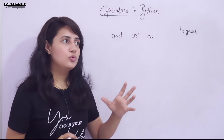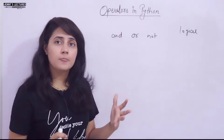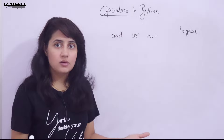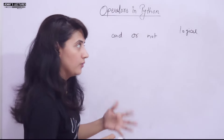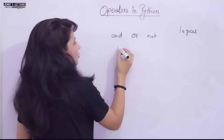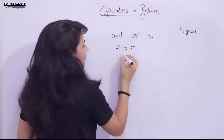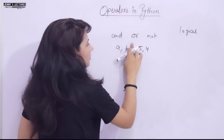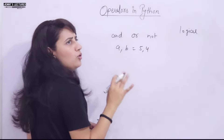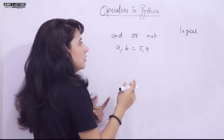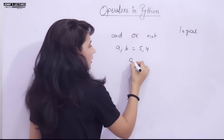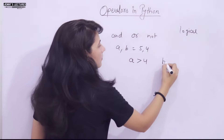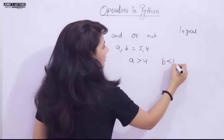These logical operators are used to combine two or more conditions, or you can say they are used to combine conditional statements. For example, if I take two variables like a, b = 5, 4, and I want to check two conditions: a should be greater than 4 and b should be less than 10.